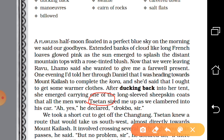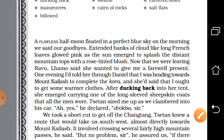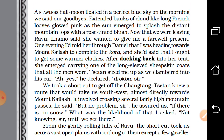They took a shortcut to get off the Changtang. Satan knew a route that would take them northwest, almost directly towards Mount Kailash. It involved crossing several fairly high mountain passes — roads between two mountains. He said, 'No problem, sir,' assuring them even if there is snow. The narrator was doubtful about snow, but Satan said he could not predict it until they got there.